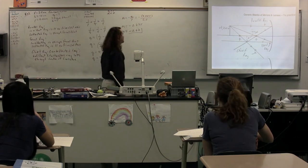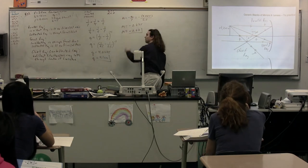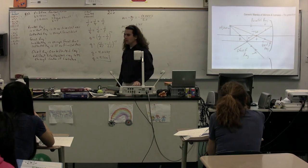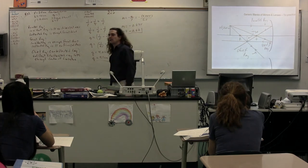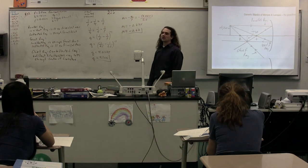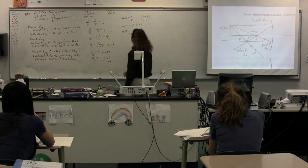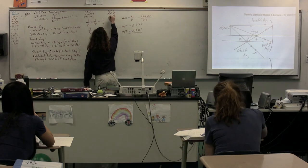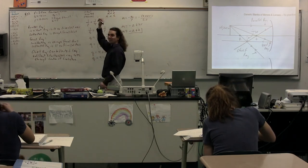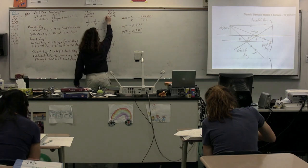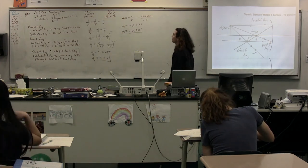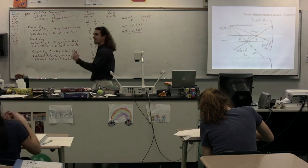We can see from the ray diagram that it's reduced, but what about the magnification tells us that? The absolute value of the magnification is less than 1, and because the absolute value is less than 1, we can see that the image is reduced.